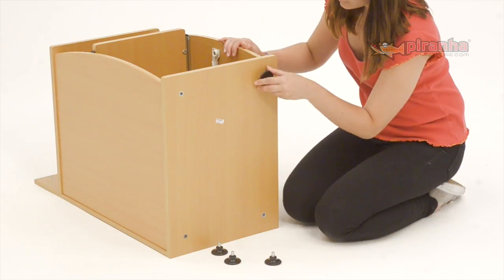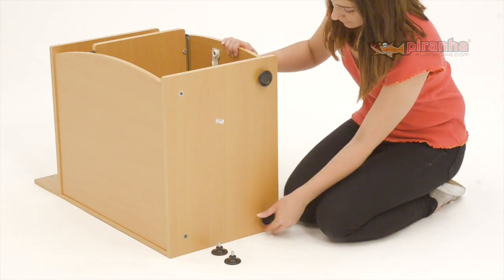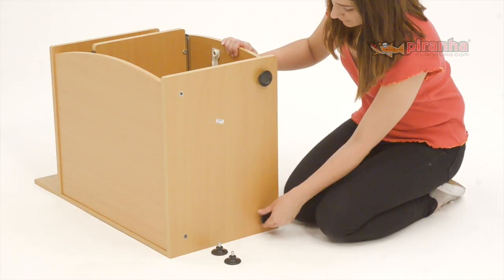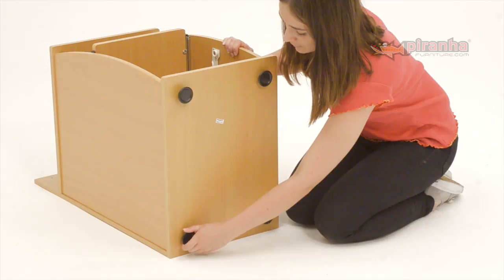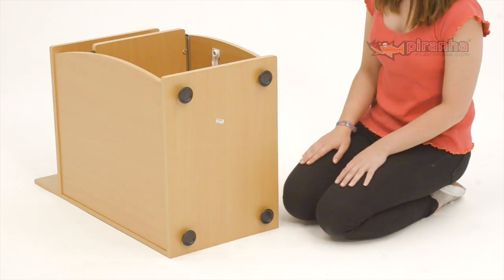Step 11. Sitting the now assembled drawer unit on its back, fit the feet by screwing them into the pre-fitted threads in the base of the unit. That's the drawer unit done. Again, it should be solid and without gaps or movement in the joints.